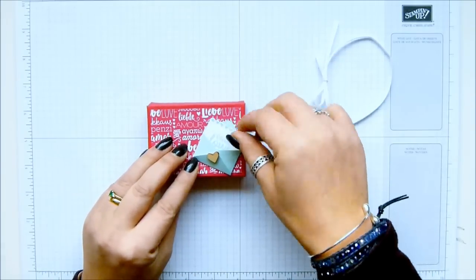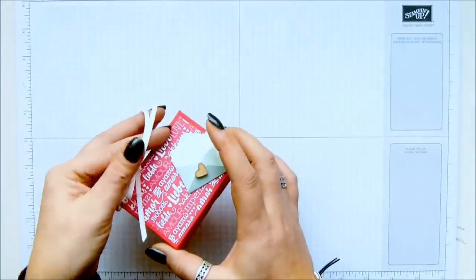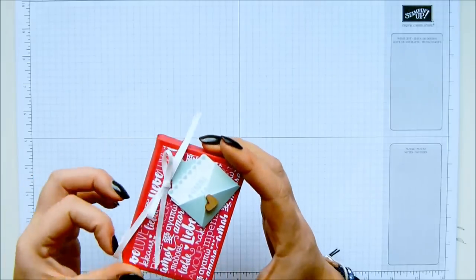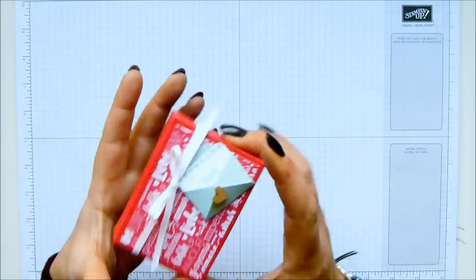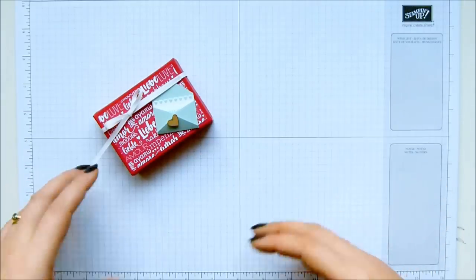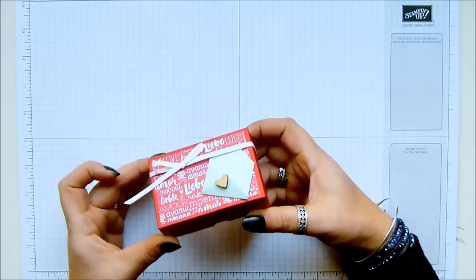The lid doesn't fold flat and I will explain that when I come to that point, but you can make it so it does. I've adhered it here for the purposes because otherwise it gapes. The finished dimensions are three and a half by two and a half by one inch, which is nine by six and a half by two and a half centimeters. You can get two of these from one sheet of cardstock.